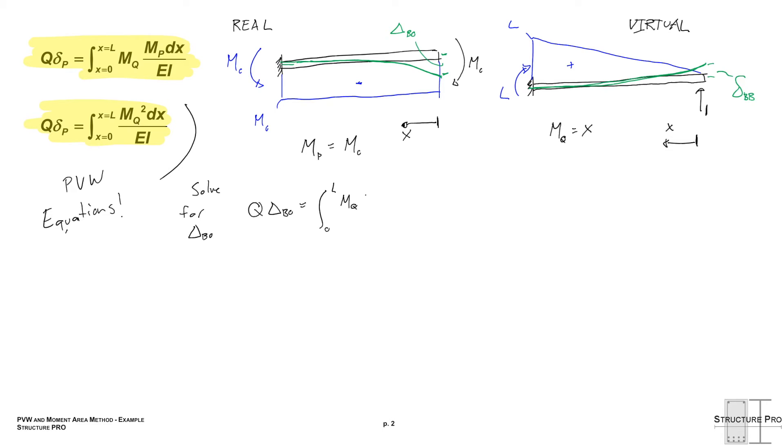So let's start by solving for delta bo. So from this equation, q times delta bo is the integral from zero to l of mq mp over ei times dx. And we can just plug it in because we actually have all these components. Delta bo is the integral from zero to l of x times the negative mo over ei. And it's integrated over dx, as we said. So yeah, that's pretty simple right there. We get delta bo is negative l squared mo over 2 ei. And you can double check that if you want to ensure that the units would come out as distance units, and they would.